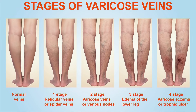In stage one, you start to see the development of reticular veins and spider veins. Stage two, you start seeing the development of varicose veins, or venous nodules, typically defined as a vein greater than three millimeters in dimension. These are pretty serious. By this time the patient is obviously acknowledging them, and often the patient comes in with complaints that they're painful or they're bleeding spontaneously.